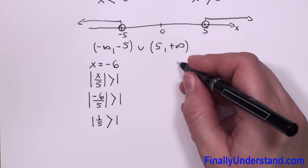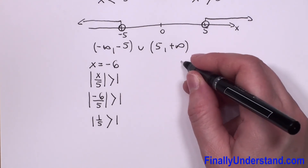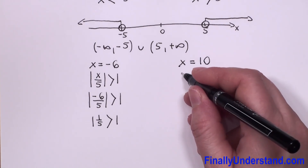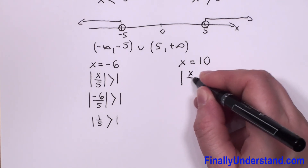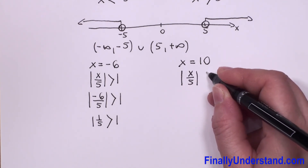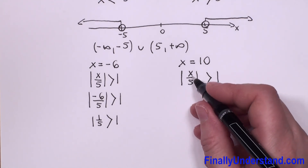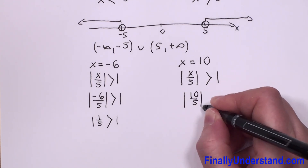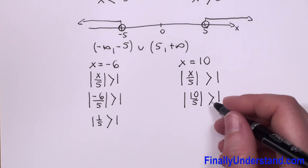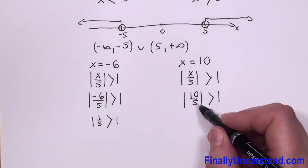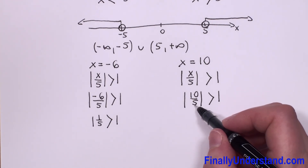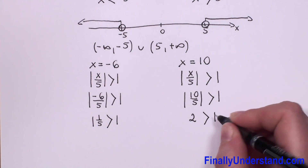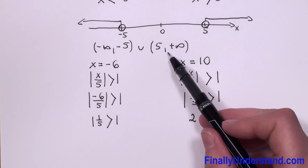Now we check the second interval. We choose a number — for example, x equals 10. Substituting: absolute value of 10 over 5 should be greater than 1. The absolute value of 10 over 5 is 10 over 5, and 10 divided by 5 is 2. Since 2 is greater than 1, our second solution is correct.